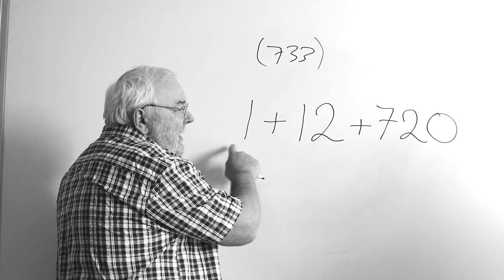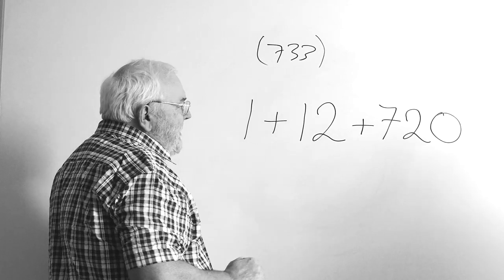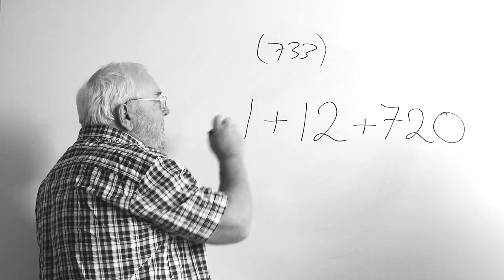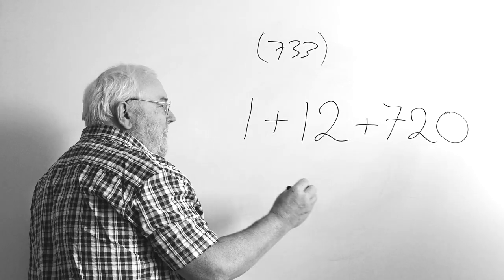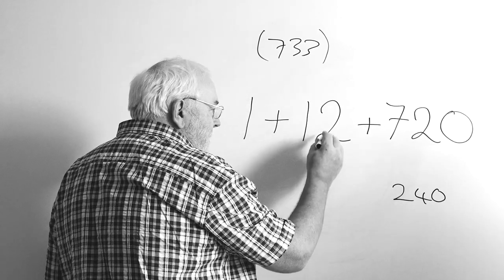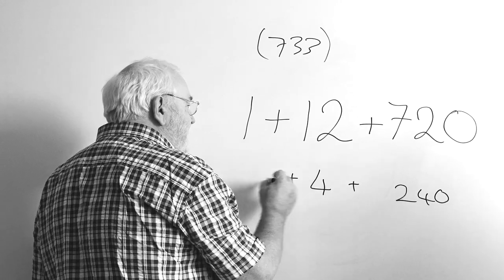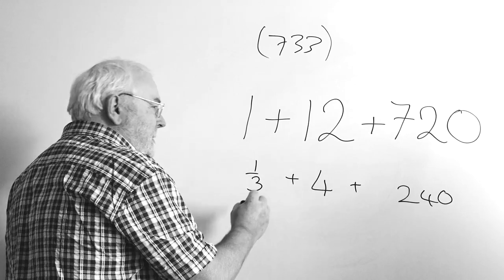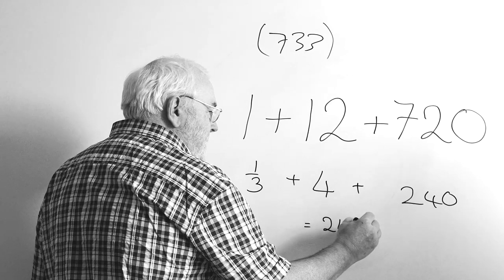And the three numbers have to add up to this. So let's see what the average fly will have done. Well, we just divide this by three. So I can divide by three, can't I? If I divide that by three, I'll get 240. If I divide that by three, I'll get four, and if I divide that by three, I'll get a third. So that answer is 244 and a third.